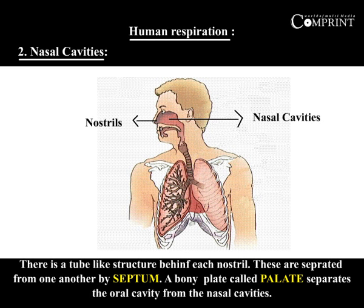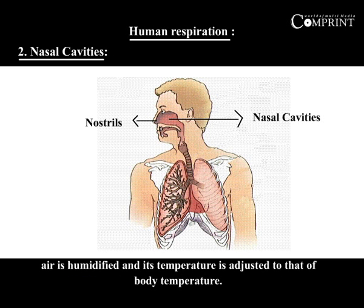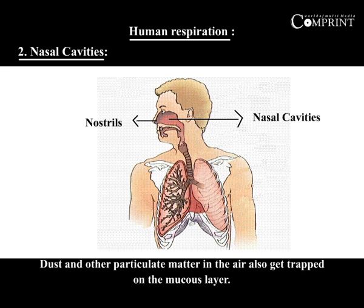Nasal cavities. There is a tube-like structure behind each nostril. These are separated from one another by a septum. A bony plate called the palate separates the oral cavity from the nasal cavities. The nasal cavities are lined with a mucous membrane which secretes mucus. When air passes over the mucus layer, it is humidified and its temperature is adjusted to body temperature. Dust and other particulate matter in the air also get trapped on the mucous layer.